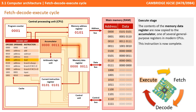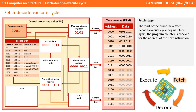Finally, the contents of the memory data register are copied to the accumulator, which is one of a number of general purpose registers found in the CPU. This first instruction is now complete. The start of a brand new fetch-decode-execute cycle begins, and once again the program counter is checked as it holds the address of the next instruction to be executed.